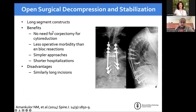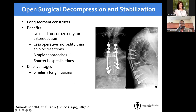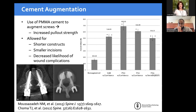Moving to open surgical decompression and stabilization: long-segment constructs were the next step — we realized we didn't need corpectomy anymore because SBRT and other adjuncts removed that need, resulting in less blood loss, less morbidity, simpler approaches, and shorter hospitalizations. However, going long still meant a long incision that had to heal before patients could get to definitive treatment, and patients with cancer have very poor bone quality.